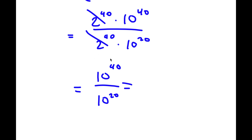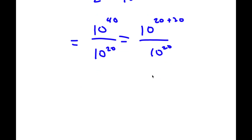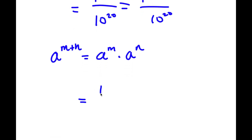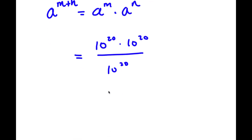Now, 10 to the power of 40 is the same thing as 10 to the power of 20 plus 20. Using the rule a to the power of m plus n equals a to the power of m times a to the power of n, that gives 10 to the power of 20 times 10 to the power of 20 over 10 to the power of 20. The two 10 to the power of 20 terms cancel, leaving 10 to the power of 20.